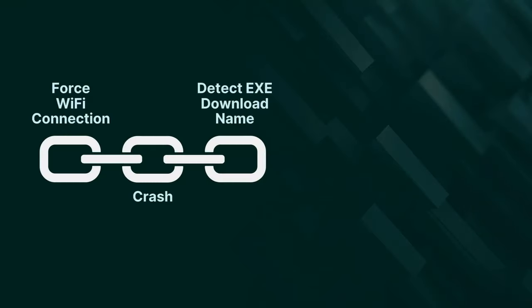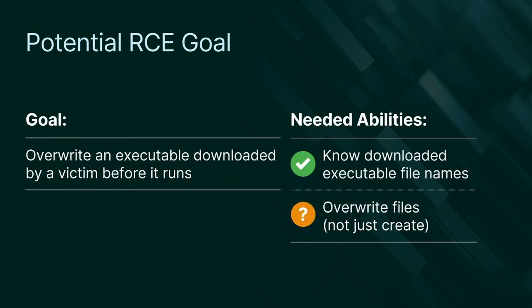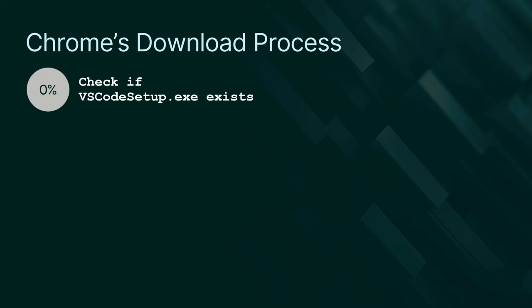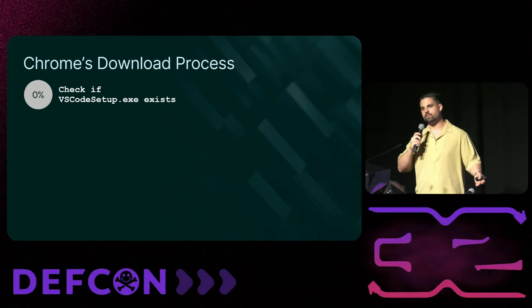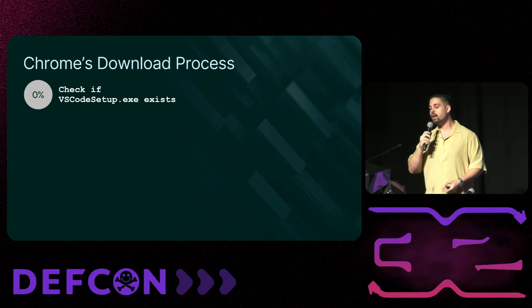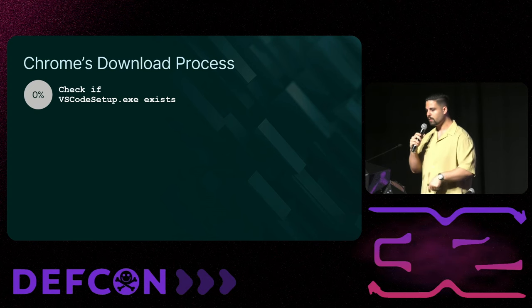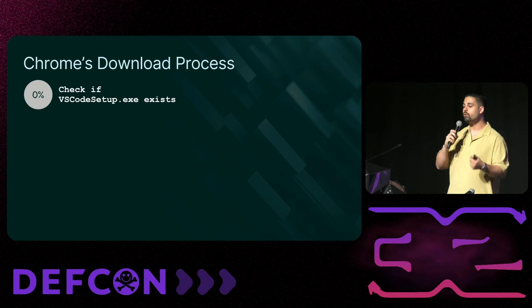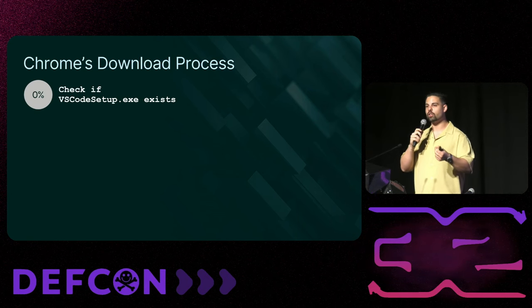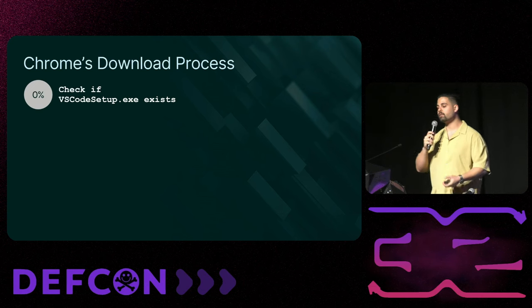Another link was added to our RCE chain — we can now detect the name of an executable downloaded by a victim. For an RCE we still need the ability to overwrite files, and we didn't have it yet. But it doesn't need to be a generic overwrite ability — it could be specific to our situation when files are being downloaded. We're trying to override Google Chrome's download while it's still ongoing.